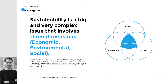As we know, sustainability is a very big and complex issue, and it involves three dimensions: economic, environmental, and social. Those dimensions, as we can see on the diagram, are tightly coupled, and their interplay causes systemic effects that cannot be fully understood or predicted based on local events.